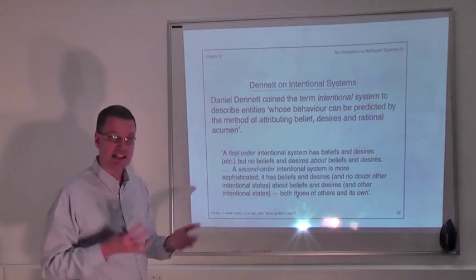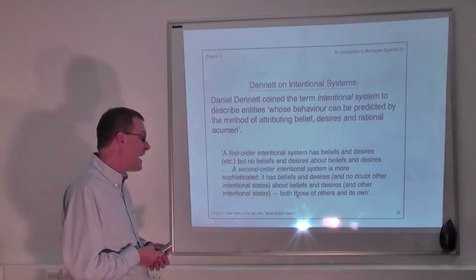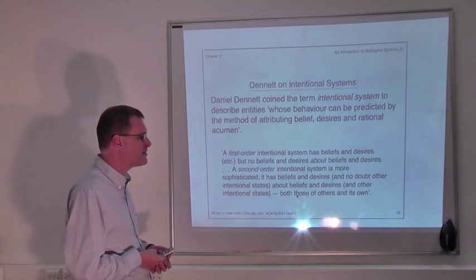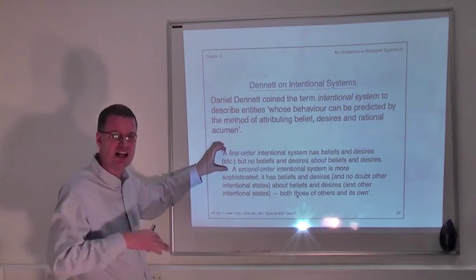It has beliefs and desires and knows about other intentional states like fears and wants about beliefs and desires and other intentional states, both those of others and of its own. So a first order intentional system has beliefs and desires, but it doesn't have beliefs and desires about beliefs and desires.